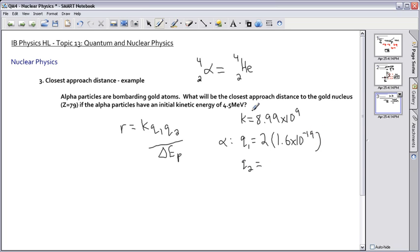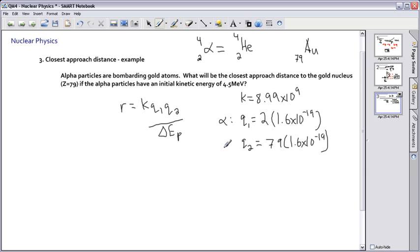Our gold has a Z value, depending on where you're from, if you're from the US or Canada. Canadians, of course, I say Z. But it has this number here, 79 at the bottom. So that tells me how many protons there are. Therefore, its charge is going to be 79 times this number here. Now that's going to be our gold.